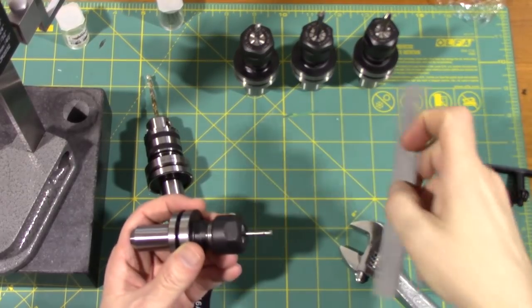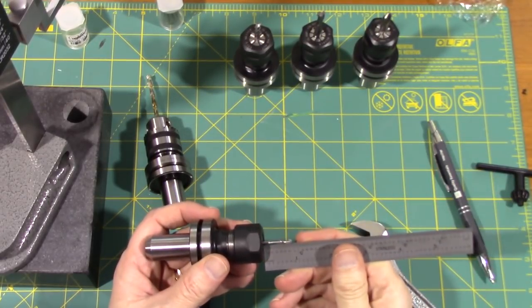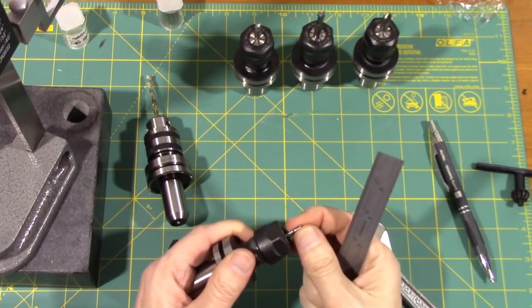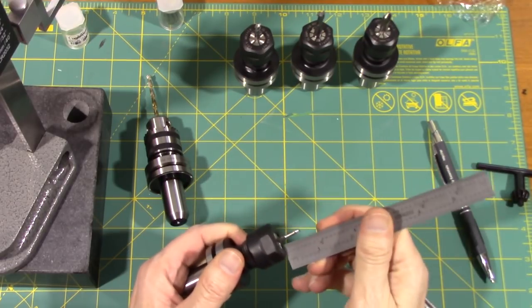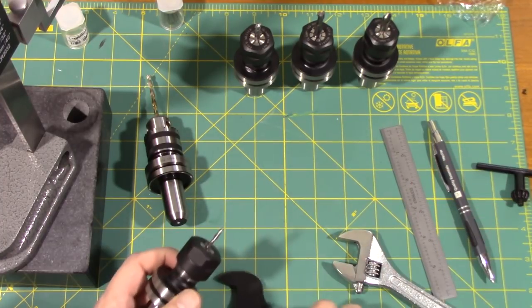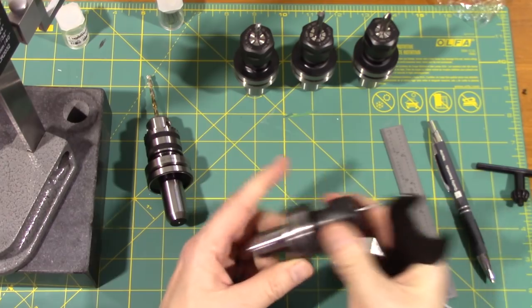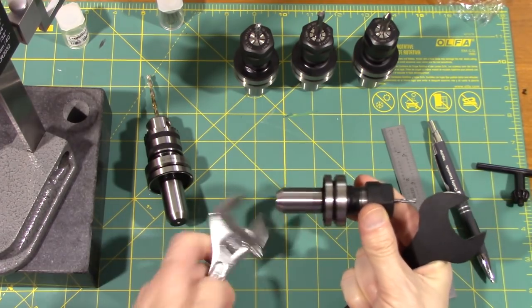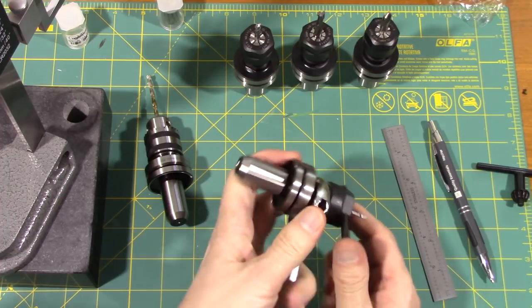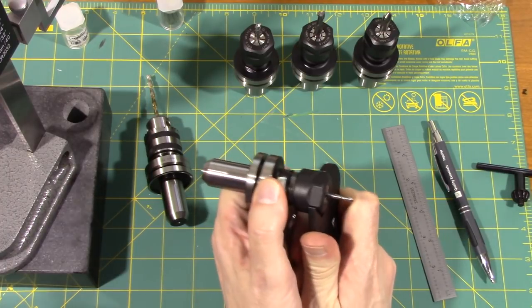I measured the required stick out in CAM, and it's half an inch, so that means that I can have a little bit more, like three quarters of an inch, to make sure I'm okay. And I don't have the correct tools yet for tightening these, so I'm going to do it this way, which I know is not the best way, but it will have to do for now.